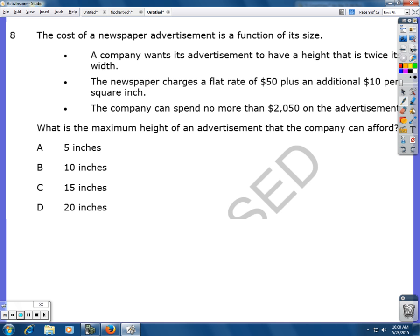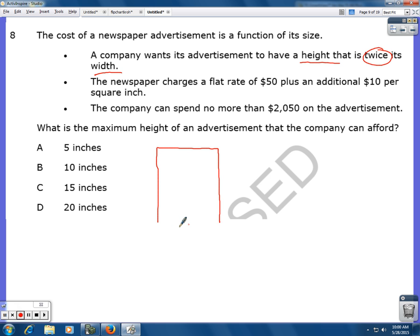A company wants its advertisement to have a height that is twice its width. So that means, here's the advertisement. We don't know what the width is, right? But whatever the width is, the height is two times the width.